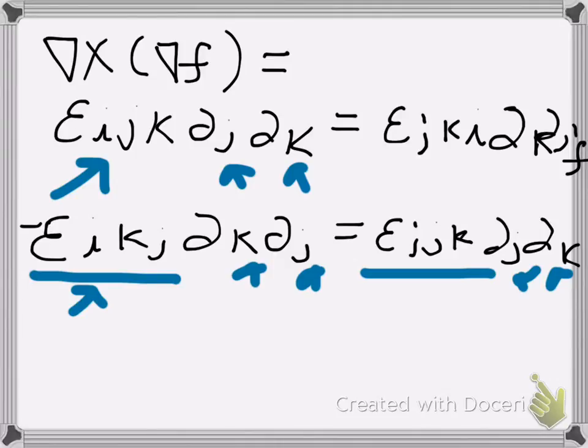So now, I've shown that a thing is equal to its own negative, and the only thing for which that's true is zero.